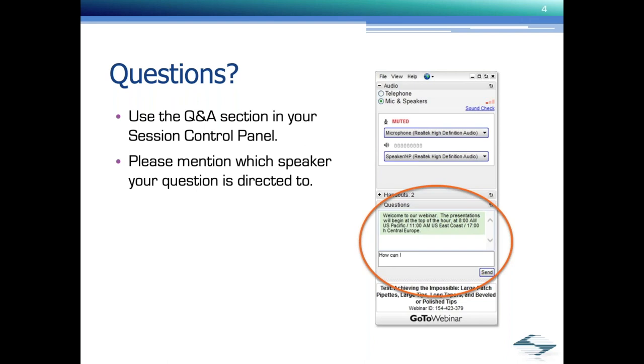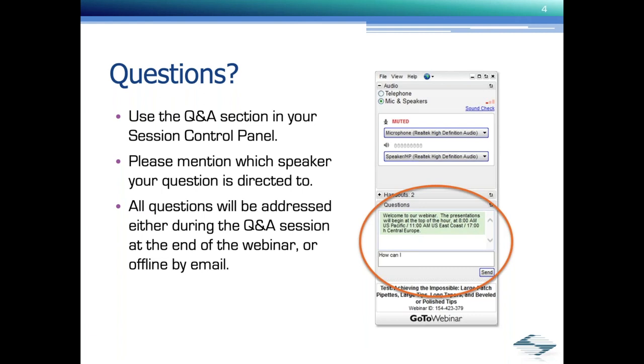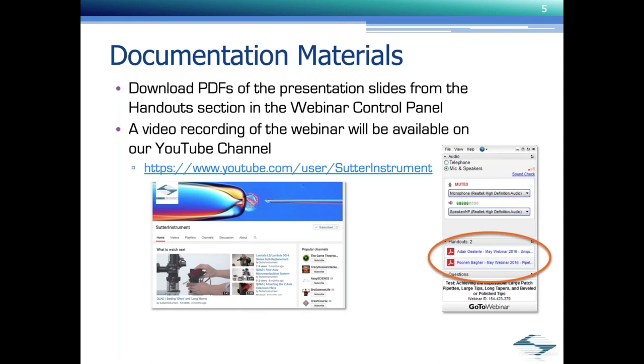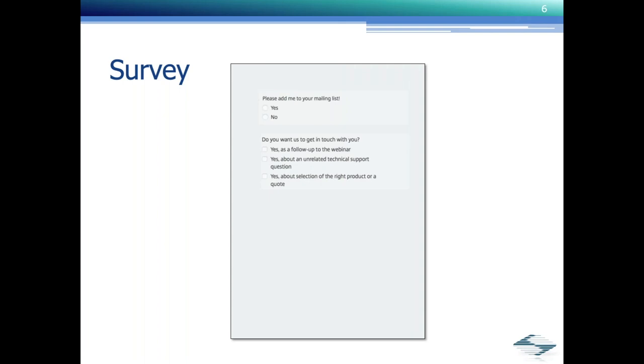If you have questions, use the Q&A section in your session control panel. Please mention which speaker your question is directed to. All questions will be addressed either during the Q&A session at the end of the webinar or offline by email. Documentation material is available for this webinar. PDFs of the presentation slides are available for download from the handout section in the webinar control panel. This webinar is being recorded. The video recording will be available on the Sutter Instruments YouTube channel. For our customers in China, it will also be available on Youku. The video recording should be available within the next two weeks. Everyone who registered for this webinar will receive an email notification once the recordings do become available. Finally, at the conclusion of this webinar, you will be redirected to a brief two-question survey.